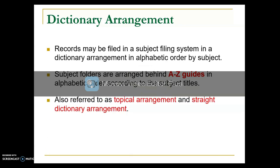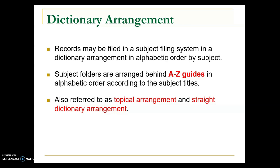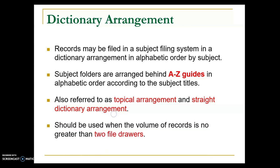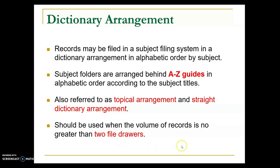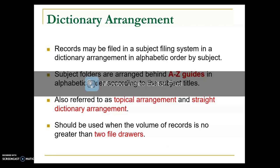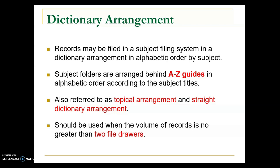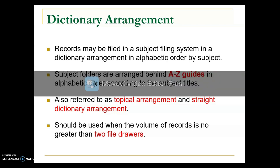This arrangement is also known as the topical arrangement or straight dictionary arrangement. It is advisable when using records with a volume of no more than two file drawers, because as the volume of records increases, retrieval from a dictionary arrangement becomes very difficult. When the volume of records is small, an index — also known as a subject file list — is not needed.